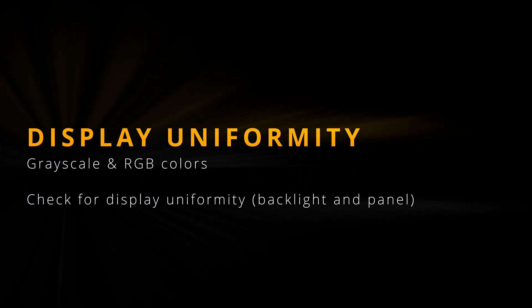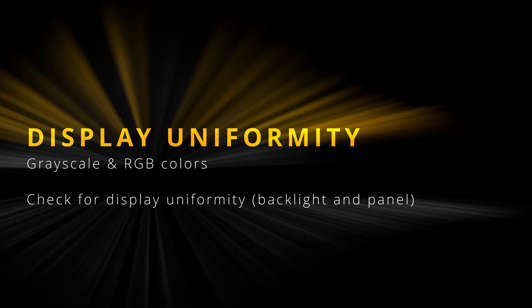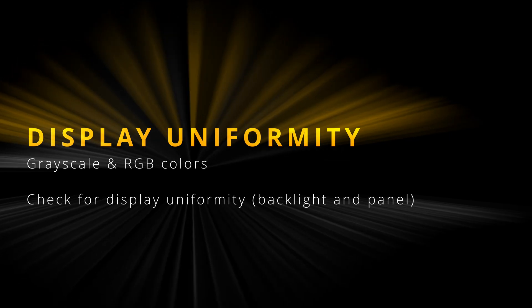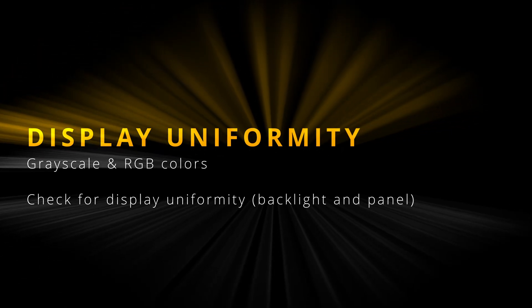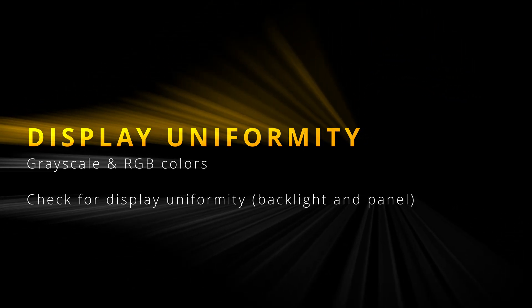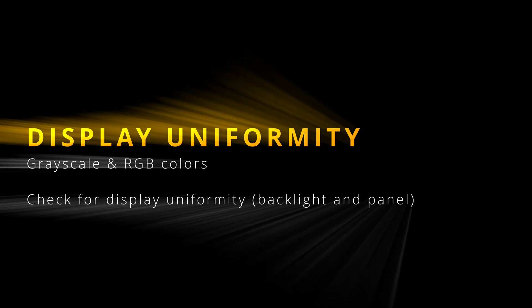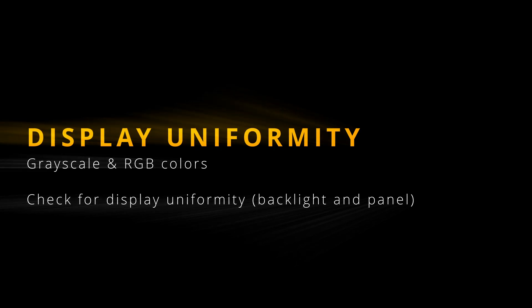Welcome to the 'Test Your Display' series. This is the third part of tests and we will be checking your display uniformity by showing black, grayscale, and RGB colors in full screen. If you see any lighter parts on the black screen they appear as clouds — the backlight uniformity is poor. If you see any lighter or darker parts on the color screens, the color uniformity of the display panel is bad. Unfortunately, display uniformity issues are technological and cannot be fixed in any way. So let's give it a go.